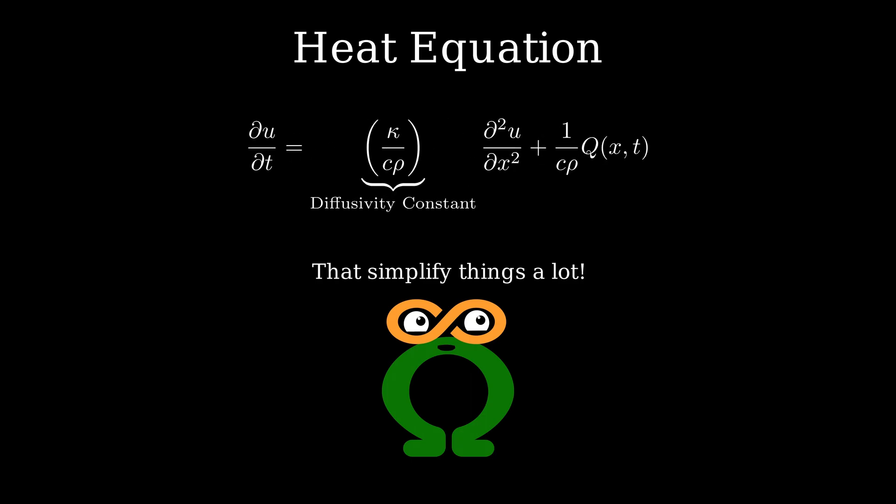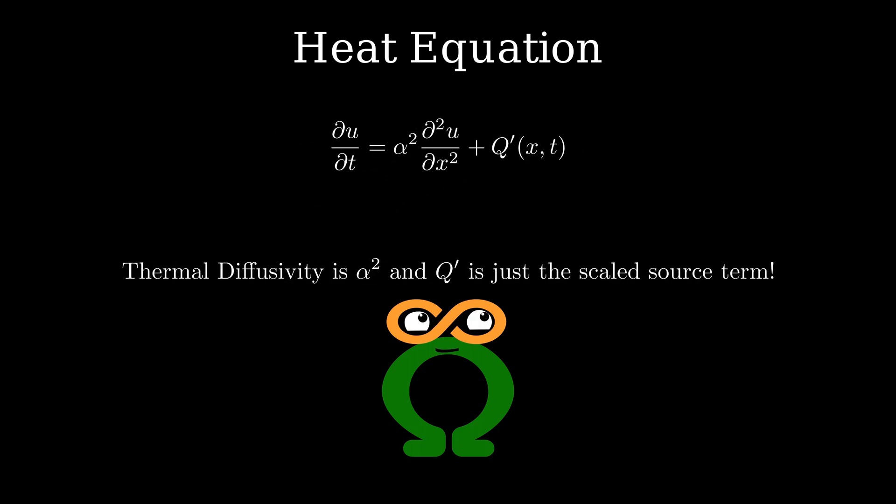Moving c and rho over to the right-hand side, we get the thermal diffusivity term next to the spatial derivative, which basically tells us how the heat diffuses in the material. Note that the constant dividing the source term just acts as a scaling factor and can be absorbed into the source term itself.